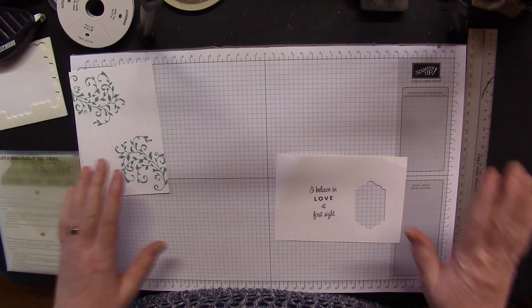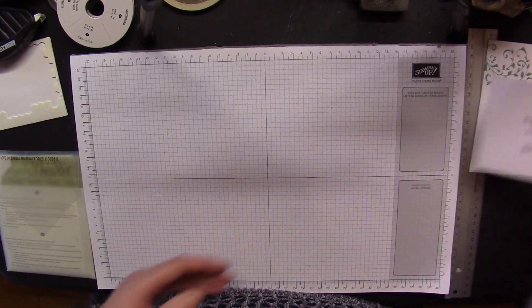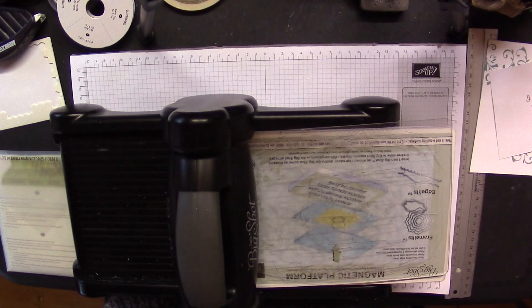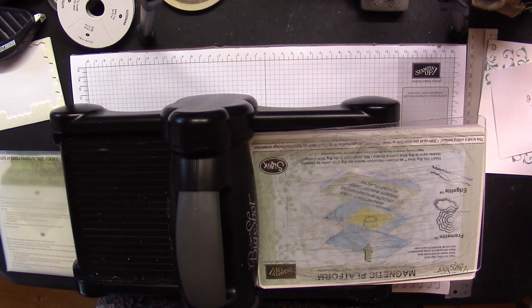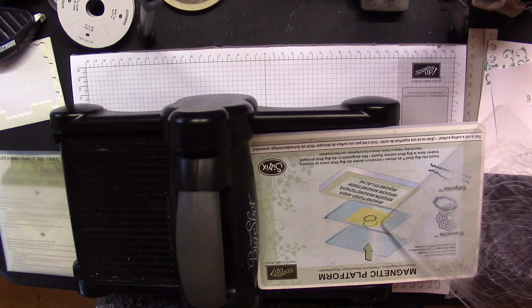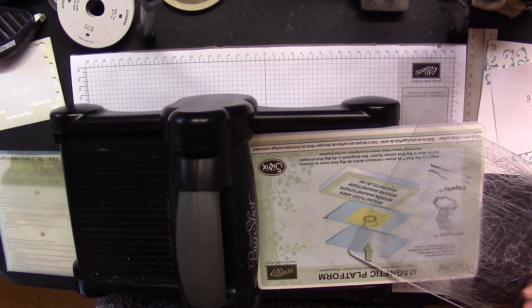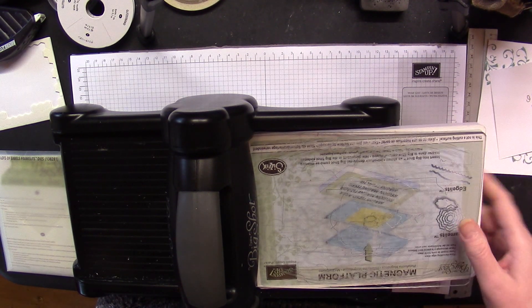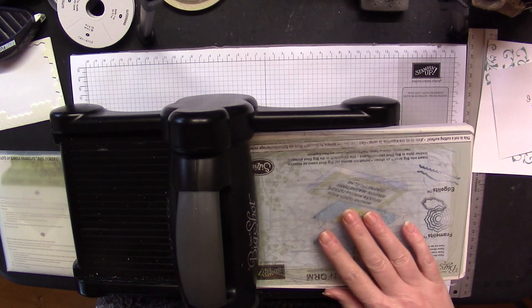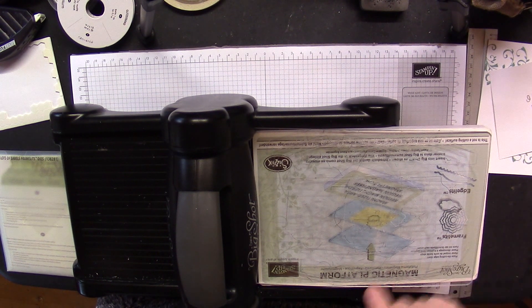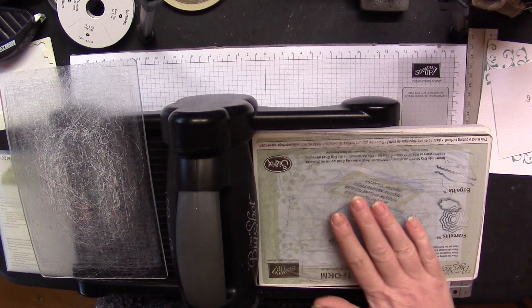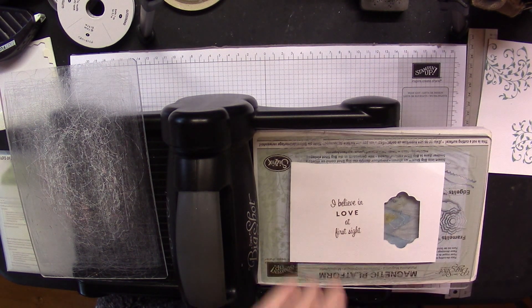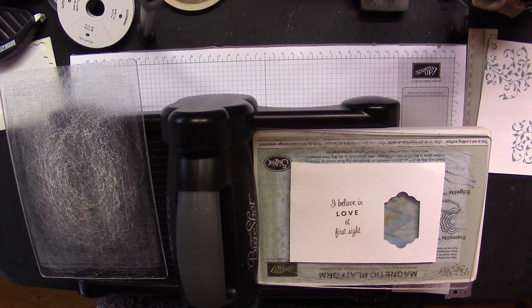Now here comes the pleasure of this new setup - I can get my Big Shot up here! It gets right in shot. The sandwich we're using is the magnetic platform. If you don't have a magnetic platform, I would urge you to invest in one. It's worth it. If you haven't got one, just use your multipurpose platform. You might need to use Post-it notes or low-tack masking tape to hold the dies in place. So you have your magnetic platform, acrylic plate, then you put on your cardstock. The dies I'm using are from the Lots of Labels framelits.